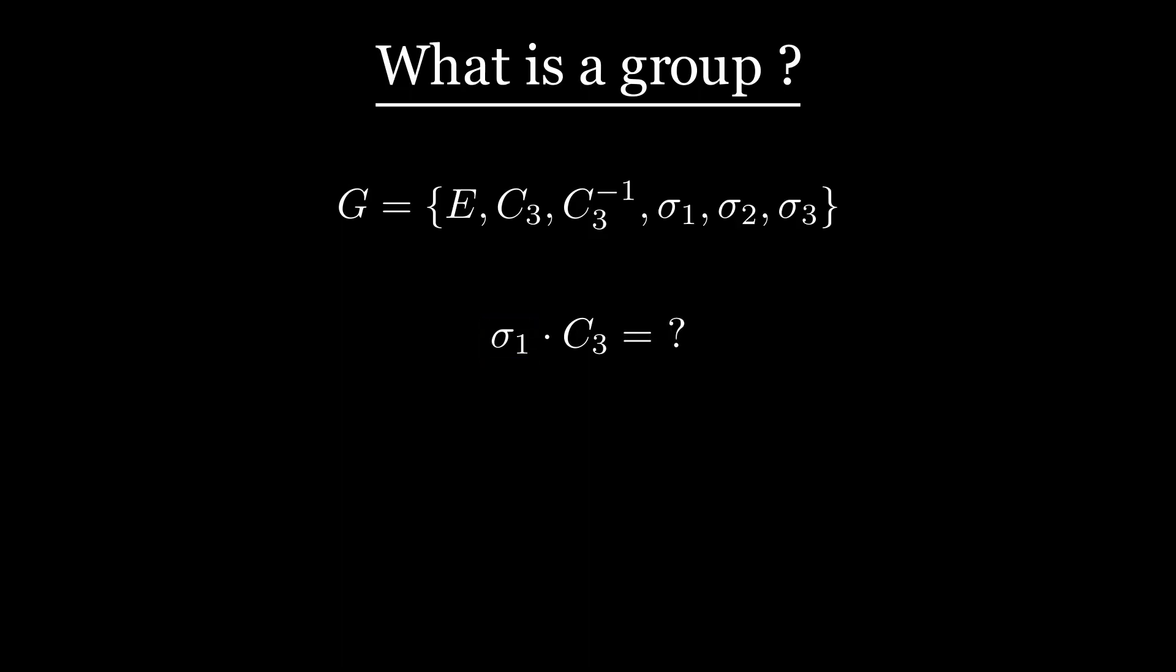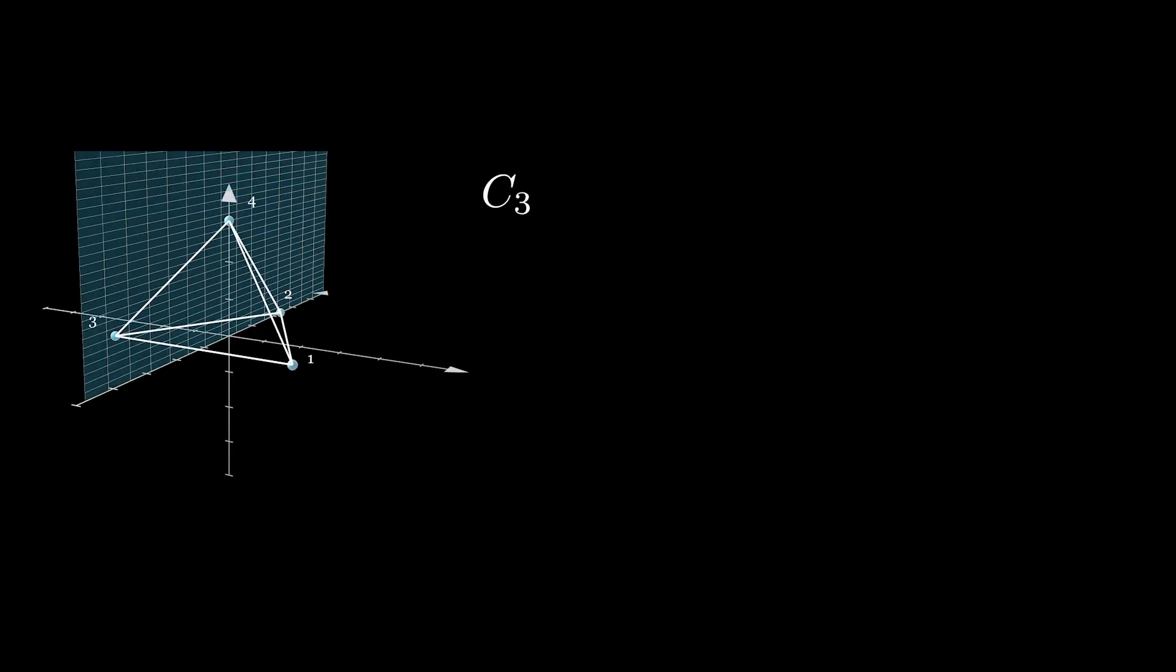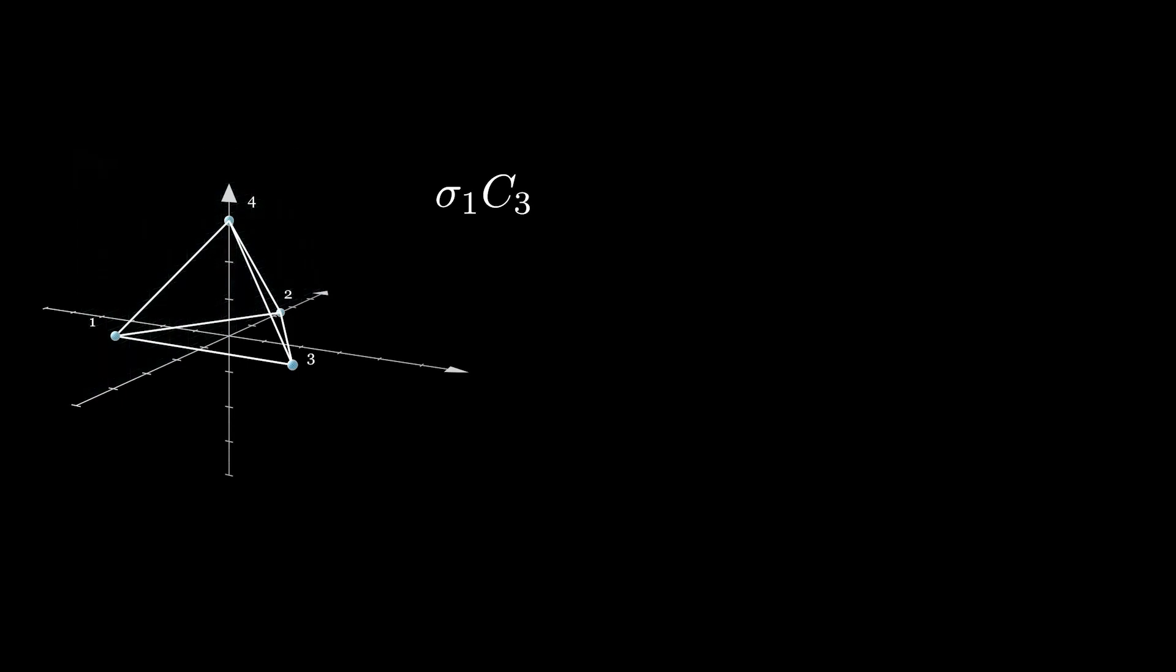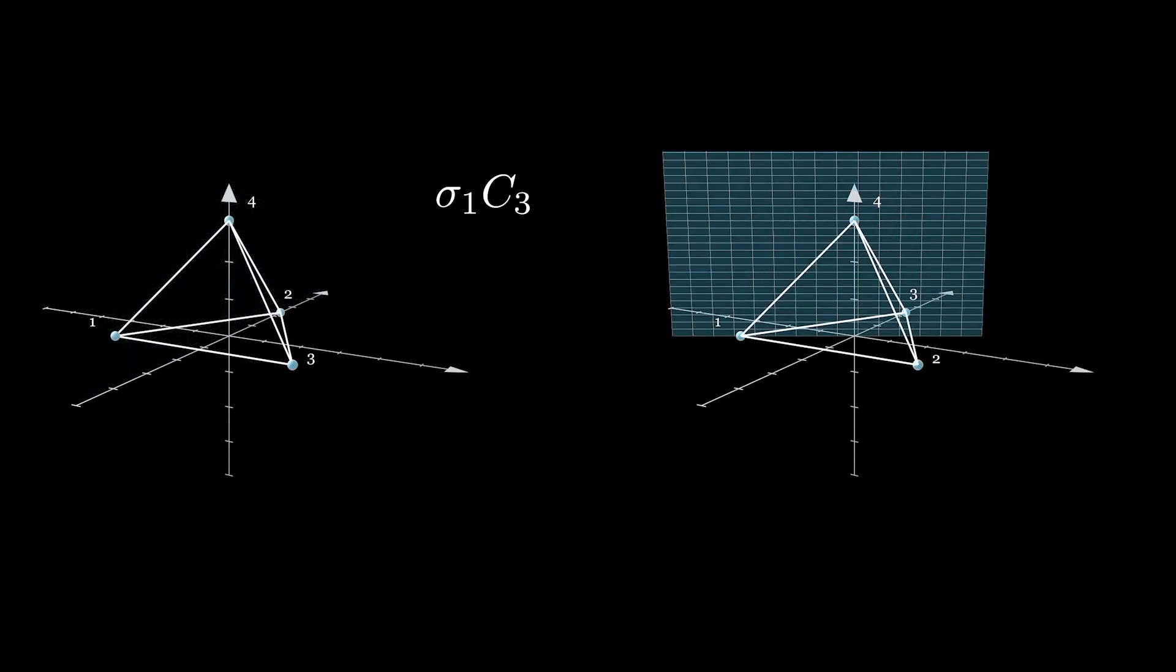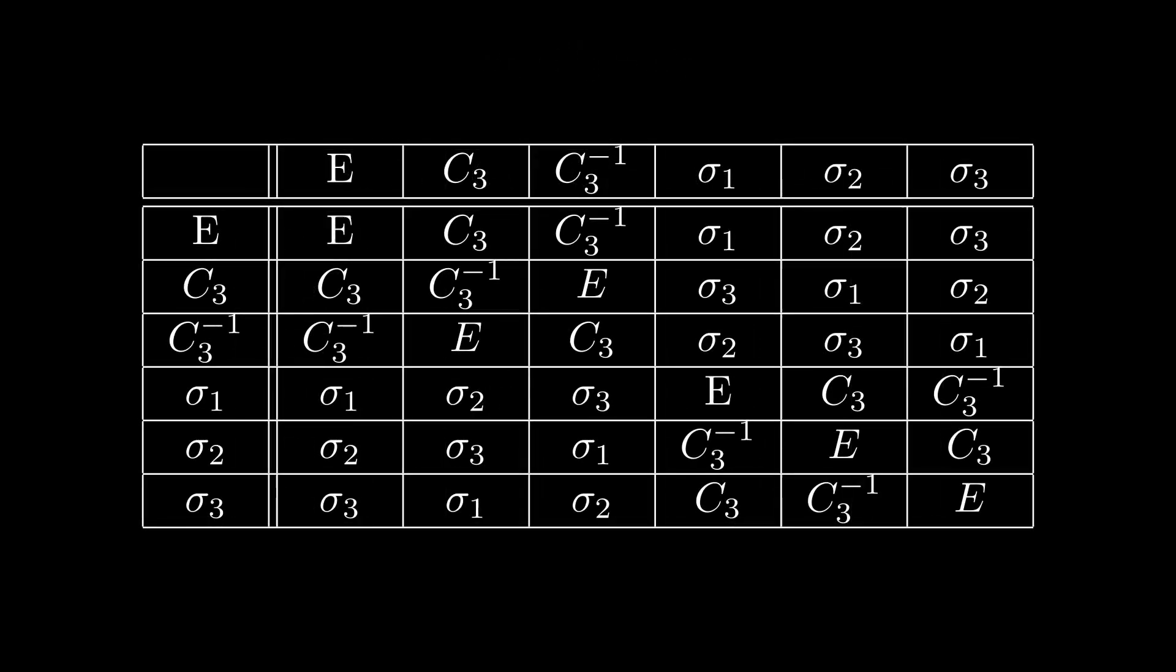For example, to compute sigma1 times c3, we first apply the rotation c3, and then the reflection sigma1, and we remark that it is equivalent to a reflection exchanging atoms two and three, which we call sigma2. Therefore we set sigma1 times c3 equals sigma2. We can write this product in a table, whose purpose is to define all the products of the group. Doing the same process for each pair of transformations, we can fill the table. This multiplication table completely defines our group, commonly called the c3v group.